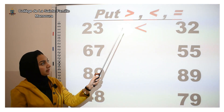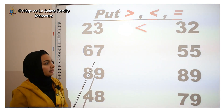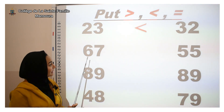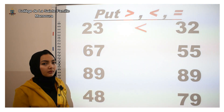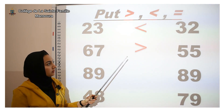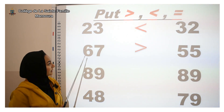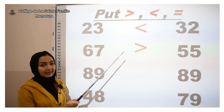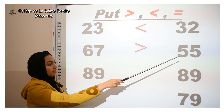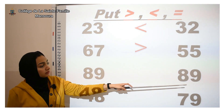This is number sixty-seven and fifty-five. Which one is greater? Excellent — sixty-seven is greater than fifty-five. So Mr. Alligator's mouth will face sixty-seven, the one that has more. We read it like: sixty-seven is greater than fifty-five.